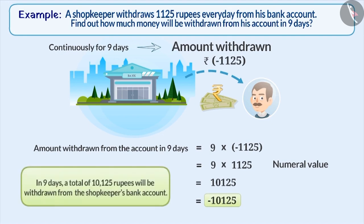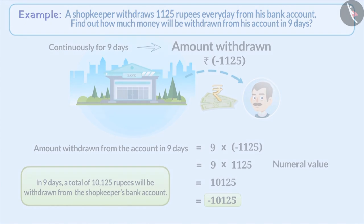That means, in 9 days, a total of 10125 rupees will be withdrawn from the shopkeeper's bank account.